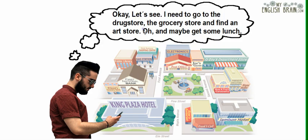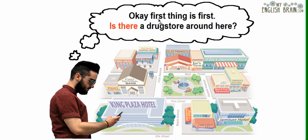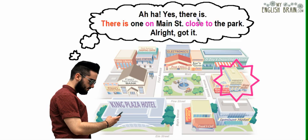I need to go to the drugstore, the grocery store, and find an art store. Oh, and maybe get some lunch. Okay, first things first — is there a drugstore around here? Yes, there is! There is one on Main Street, close to the park.